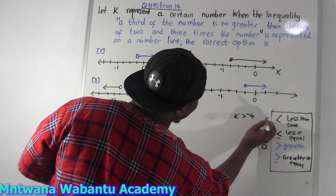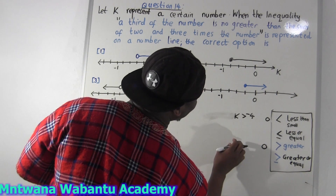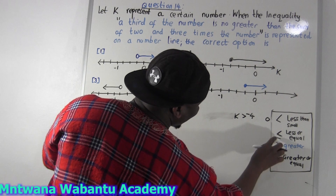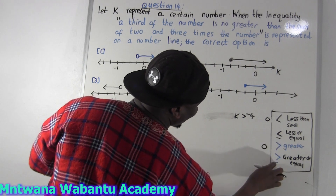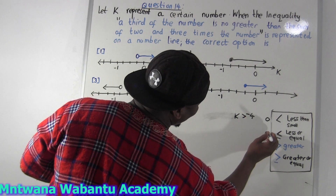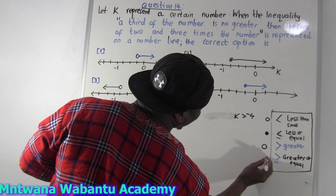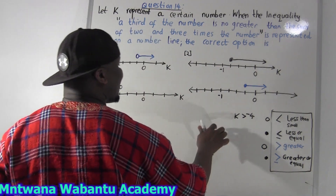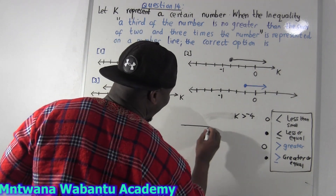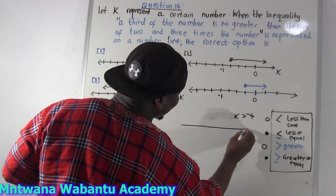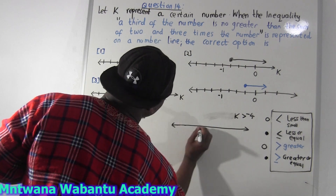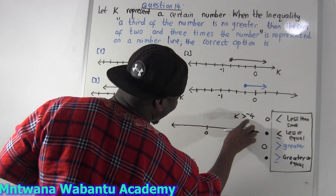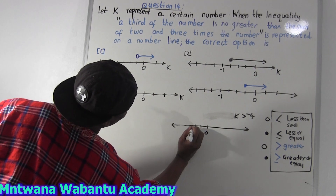An open, empty circle. But for greater or equal, or less or equal, you represent it by a solid dot — a filled circle. For example, somebody says represent K greater than negative 4 on a number line. We draw a number line, and let's assume this is 0. We have negative 1, negative 2, negative 3, negative 4.